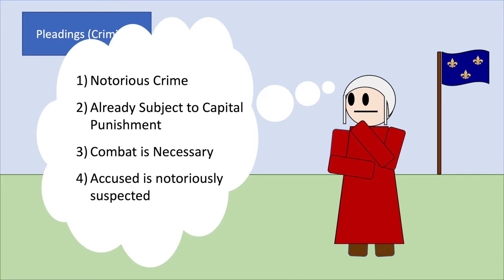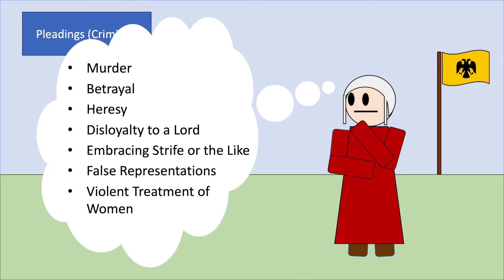And four: despite a lack of evidence, the accused was notoriously suspected of the deed. So the tests became stricter and stricter — this method still existed in the legal system, but was used very sparingly. We also see this in the Holy Roman Empire. Hans Talhofer's fighting manual states that trial by combat was once allowed across the board, but was now considered viable only in seven cases: murder, betrayal, heresy, disloyalty to a lord, embracing strife and the like — probably meaning serious crimes of disorder such as starting riots or revolutions — false representations, and the violent treatment of women. Only in these seven cases could someone offer to prove their claim by their body.